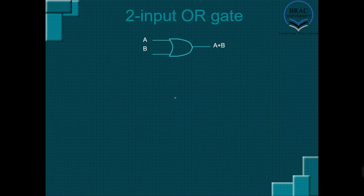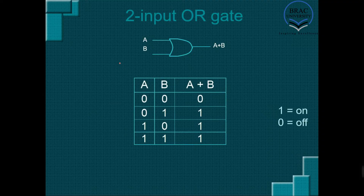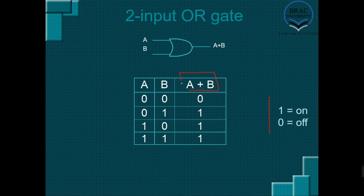Now let's talk about a two-input OR gate. This is the truth table, similar to the AND gate's truth table, with 1 for ON and 0 for OFF. We have two inputs A and B, so there are four different combinations: 0-0, 0-1, 1-0, and 1-1. At the output we can see that the symbol is a plus sign. But remember — this plus sign does not indicate an addition operation; it is not indicating that we're adding A and B. It indicates OR gate. So the plus sign is the symbol for an OR gate.